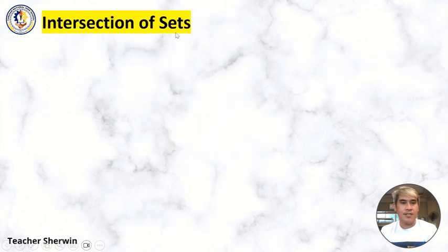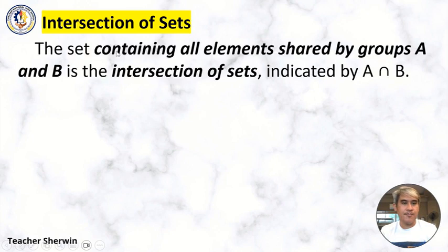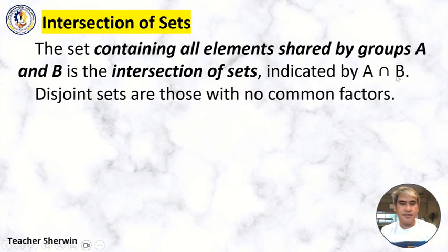How about Intersection of Sets? The set containing all elements shared by groups A and B in the intersection of sets is indicated by A intersection B. These joint sets are those with no common factors.